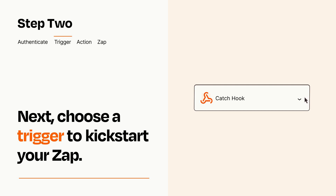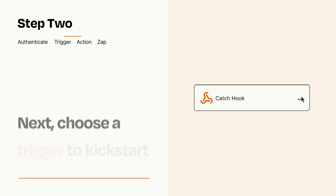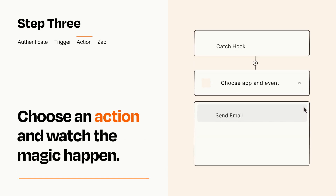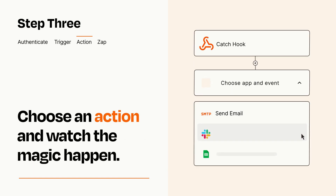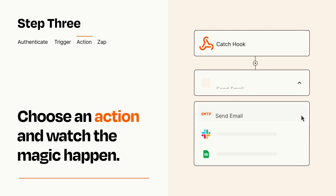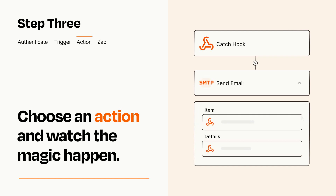This last part is where the magic happens. Choose the action you want to happen in your target app. You'll see a bunch of fields where you can specify the details of your Zap. You can type free form text or pull data in from your trigger step as needed.